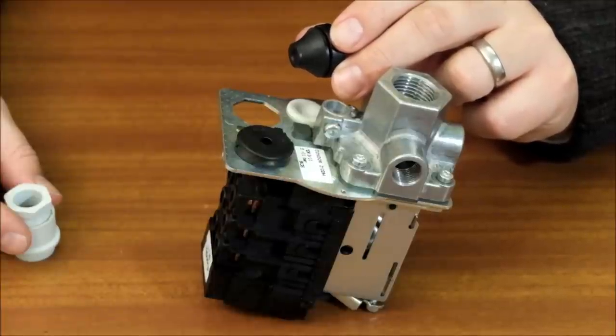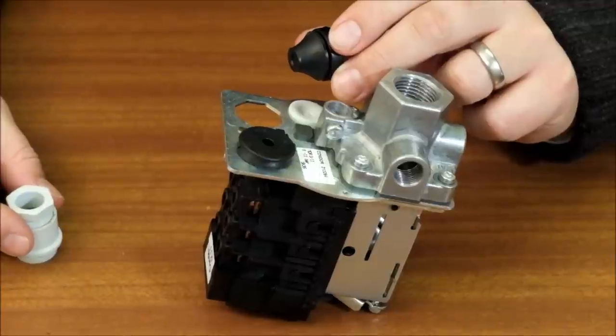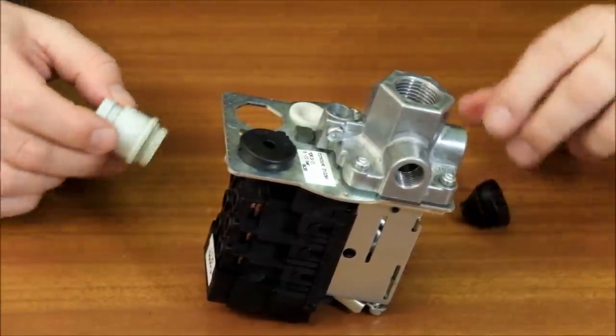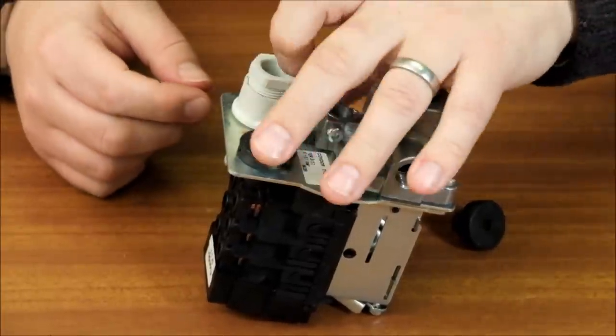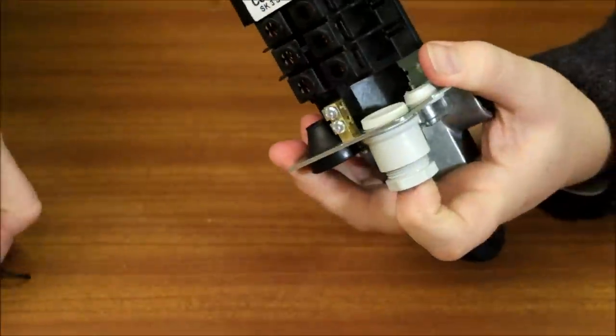Lastly, the cable glands can be inserted by first removing the rubber grommet and then inserting the cable glands. The cable gland is held in place by a circlip.